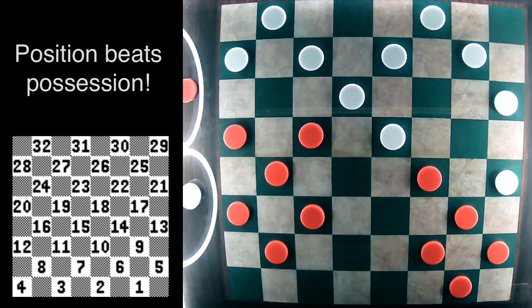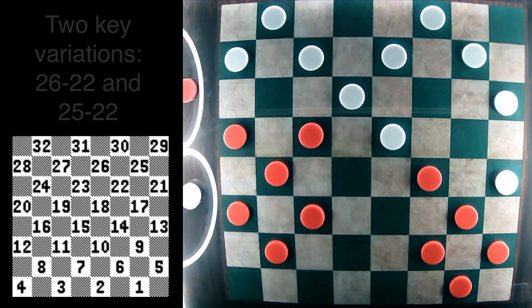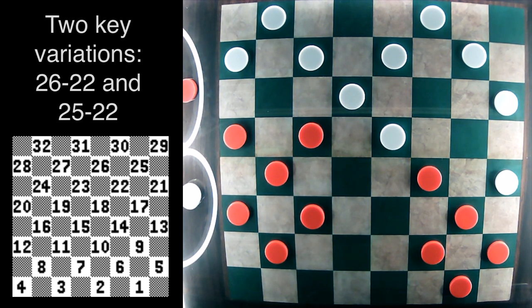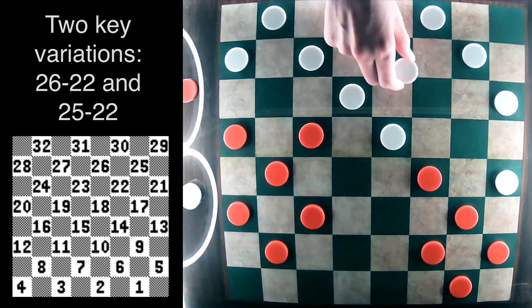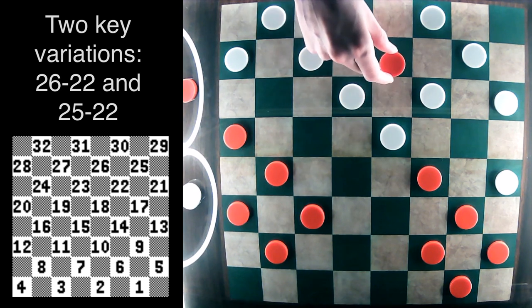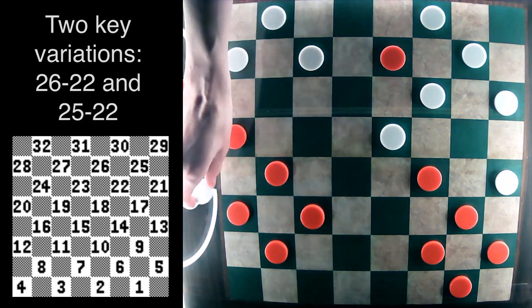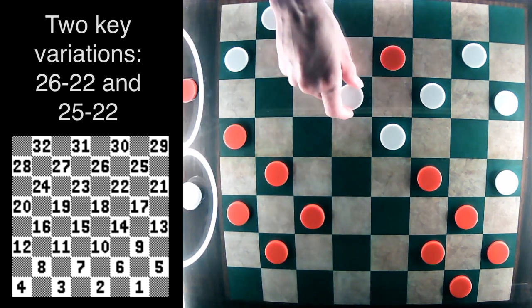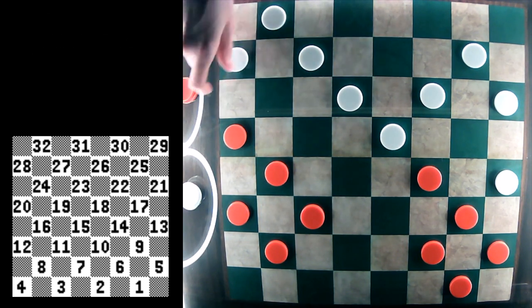Now there's two key variations at this point, and I'll cover both. The first is this 26-22 move. And it's probably not as natural as the 25-22. But I bring it up because there's a really nice tactical sequence here. Red looks to be in serious trouble with very few playable moves on the board. But there's a wonderful tactical sequence here that can get it out of this jam.